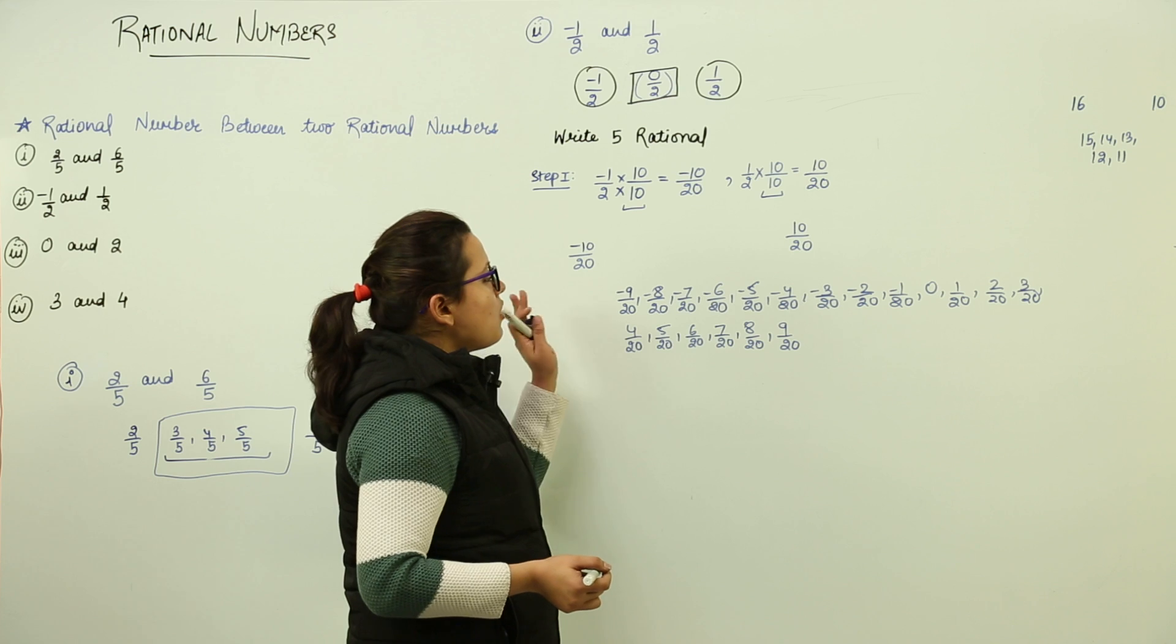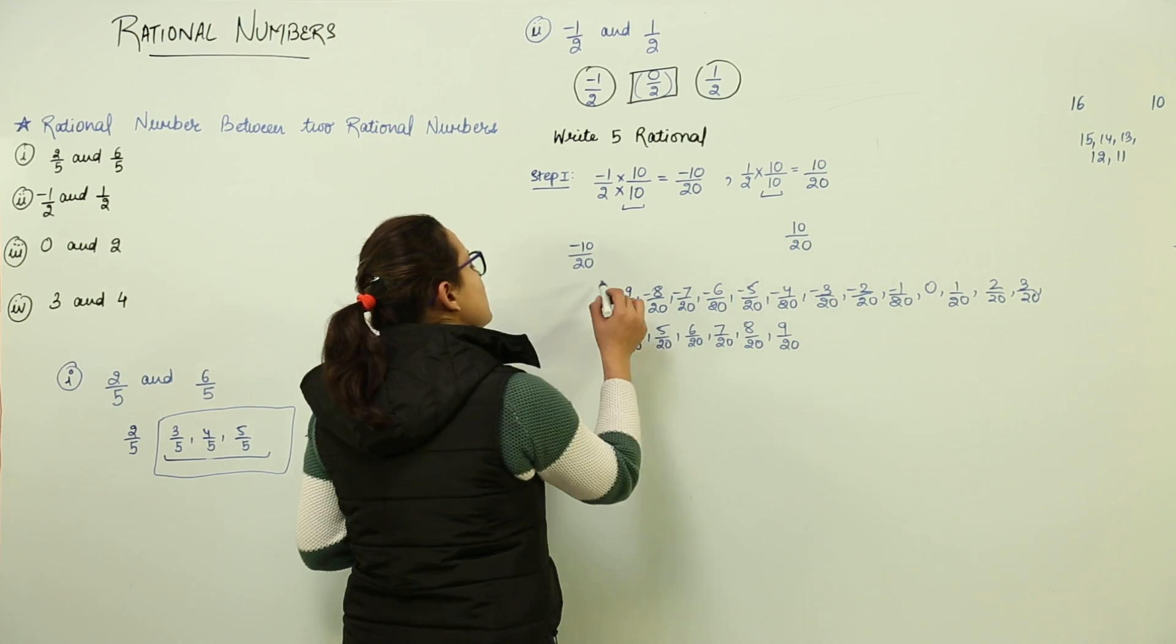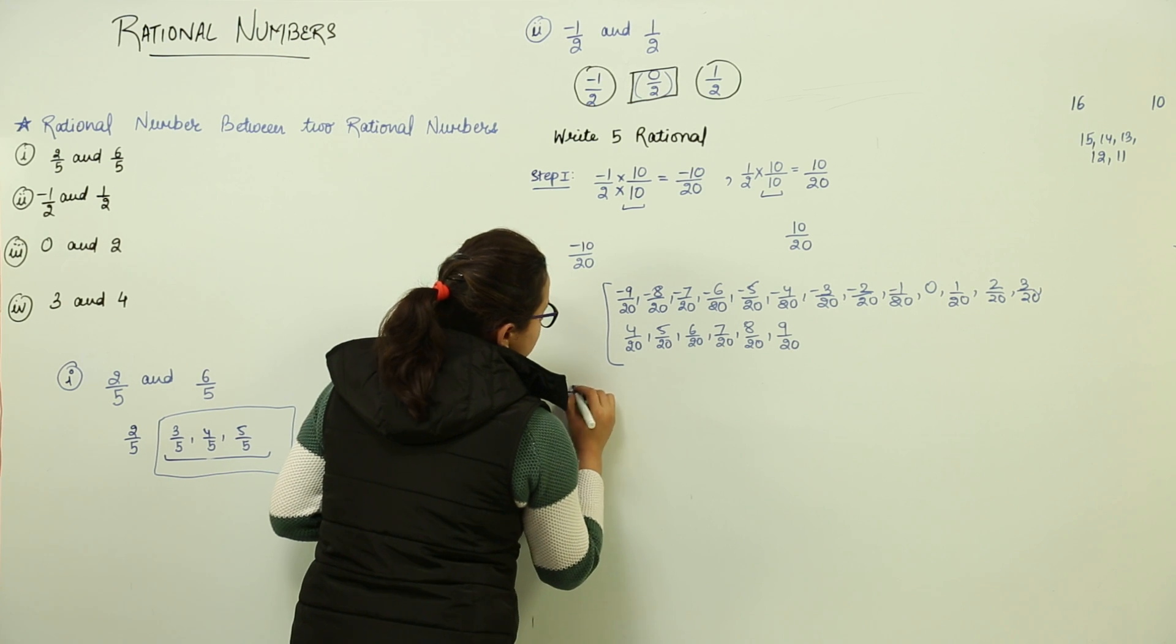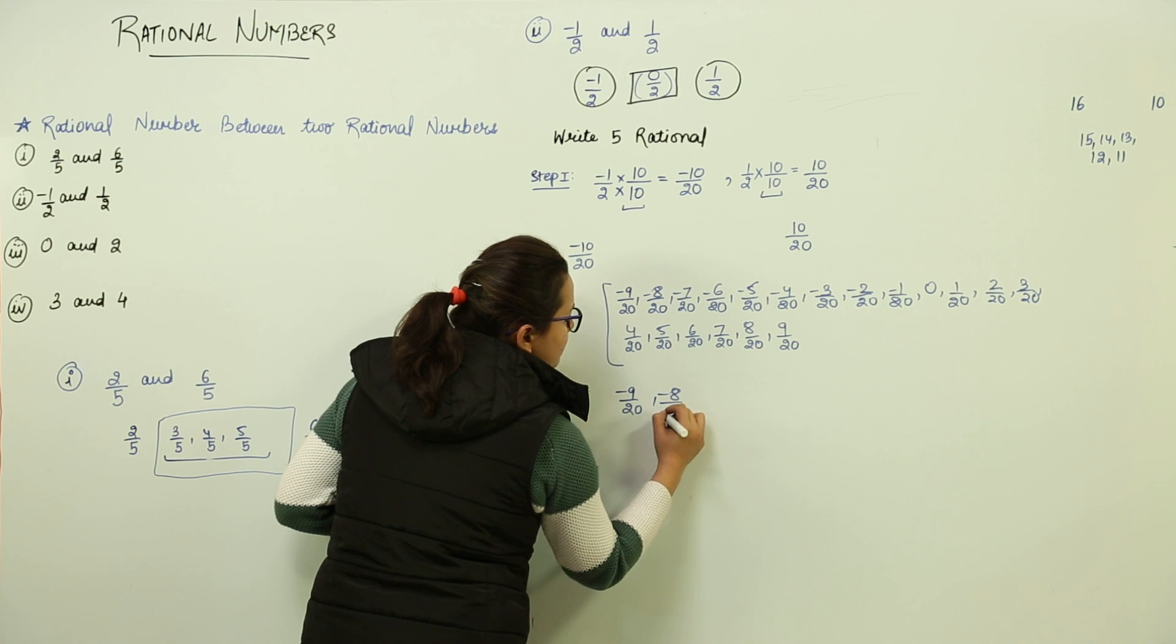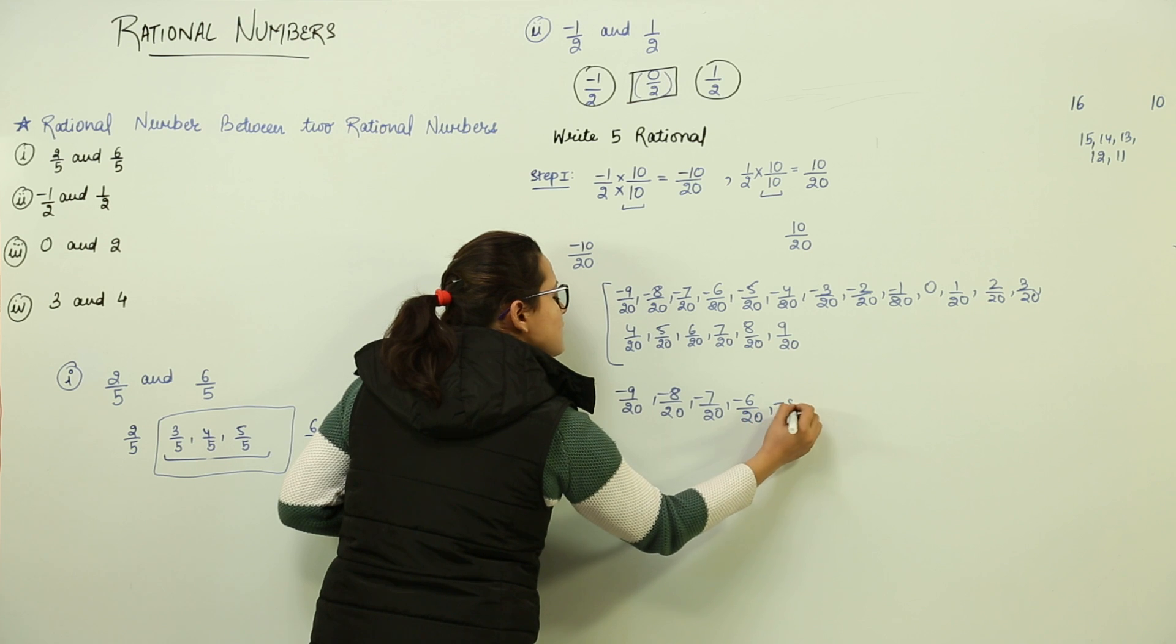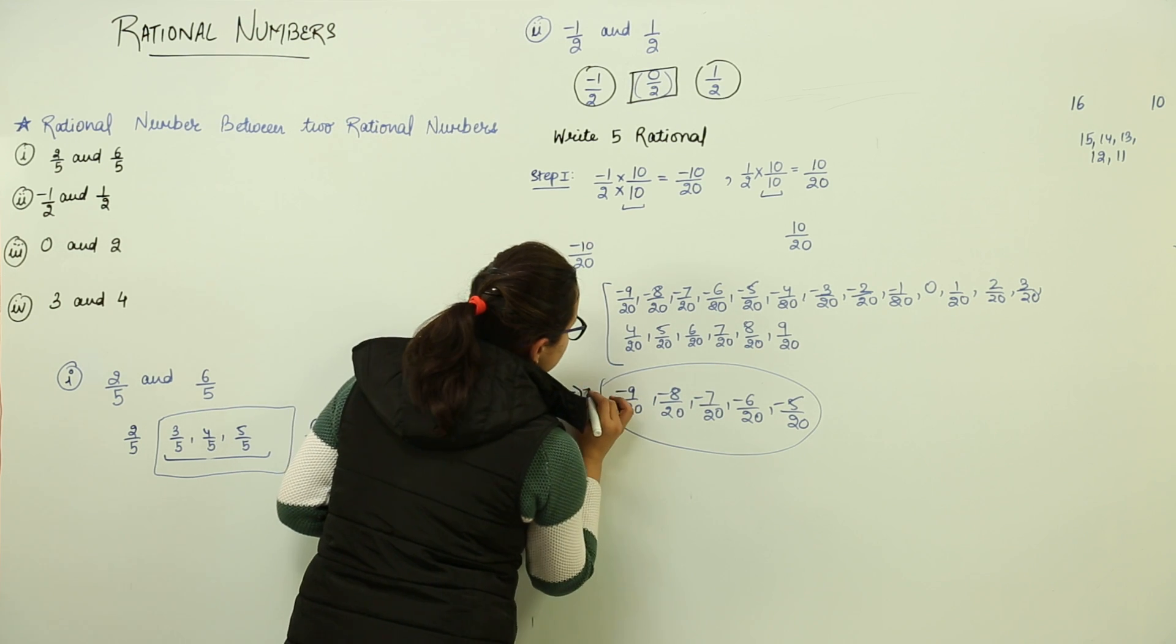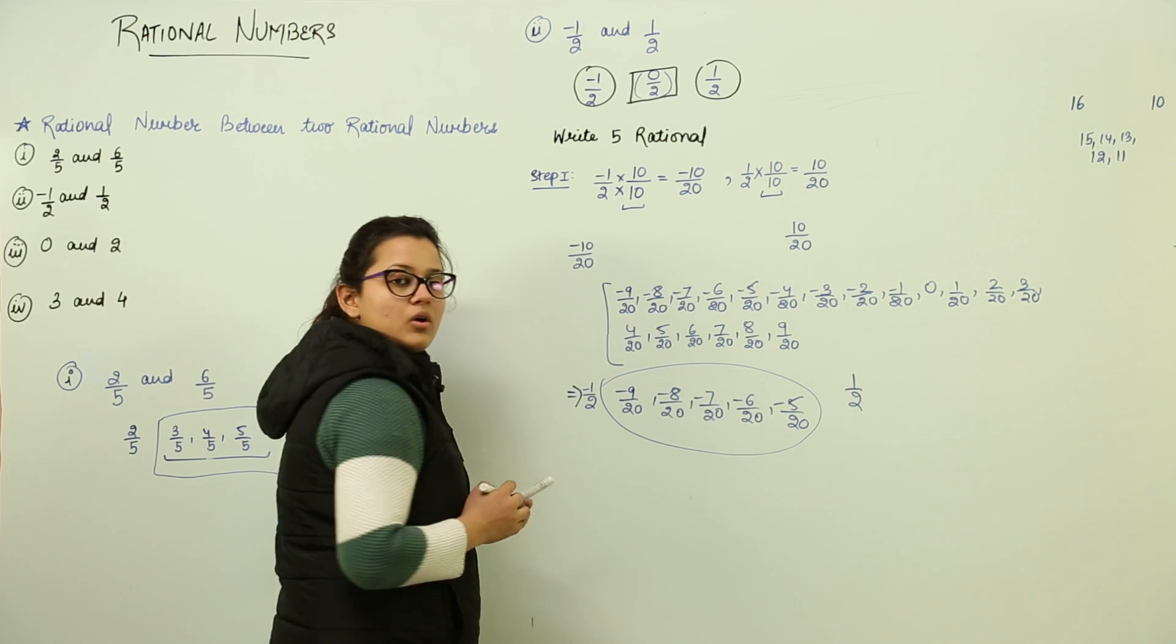So you can see how many numbers I have found between these two fractions. You can write any 5 rational numbers out of these. So your answer would be any 5 rational numbers. I can write the answer as minus 9 by 20, minus 8 by 20, minus 7 by 20, minus 6 by 20, and minus 5 over 20. These are my 5 rational numbers between minus 1 by 2 and plus 1 by 2.